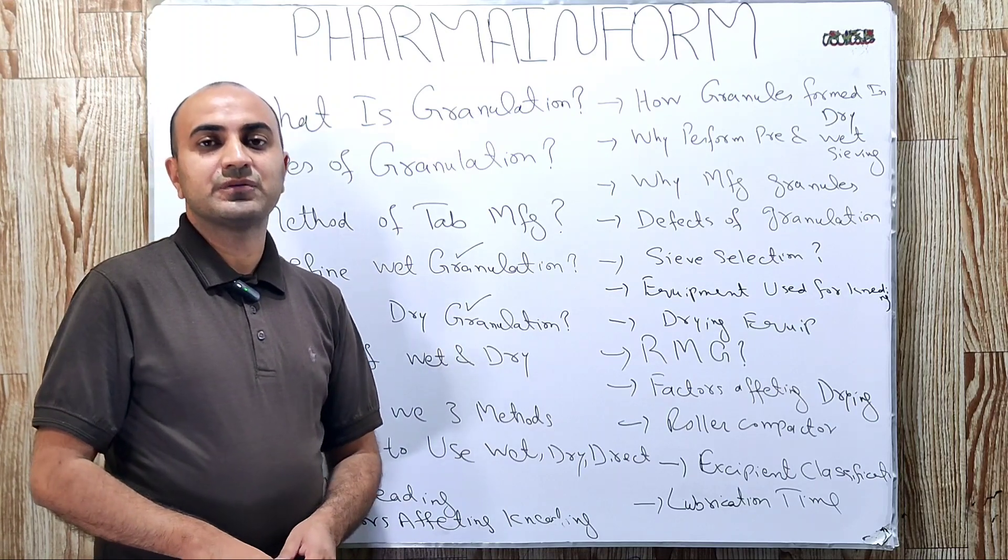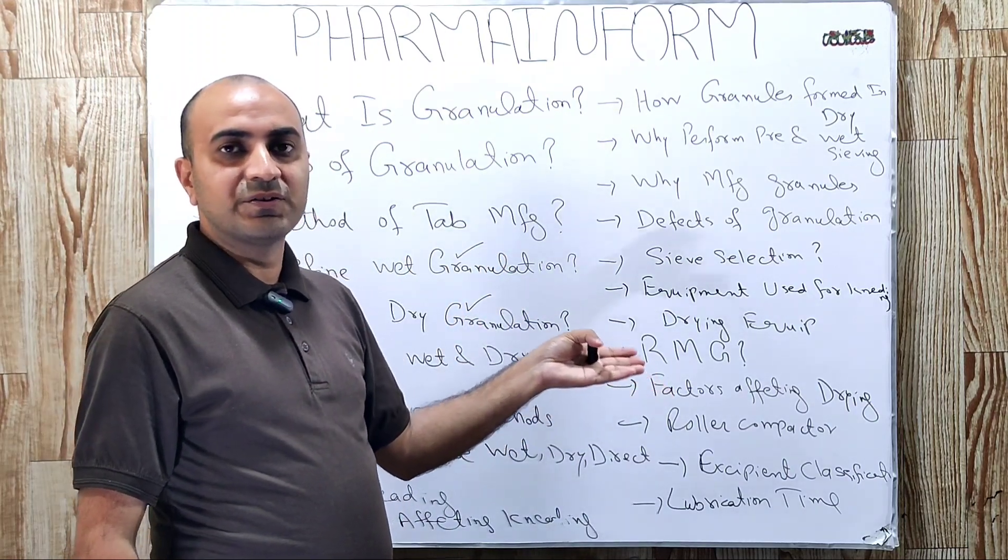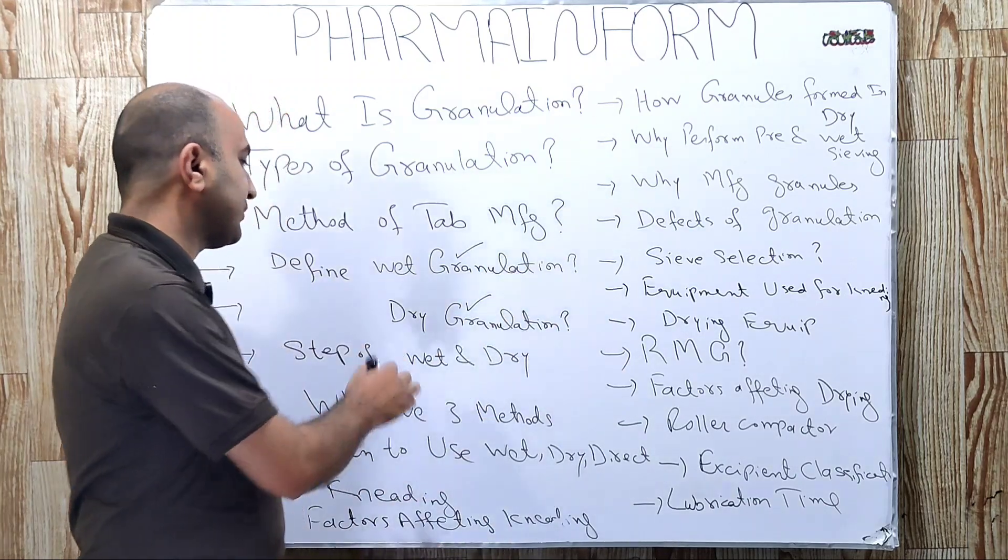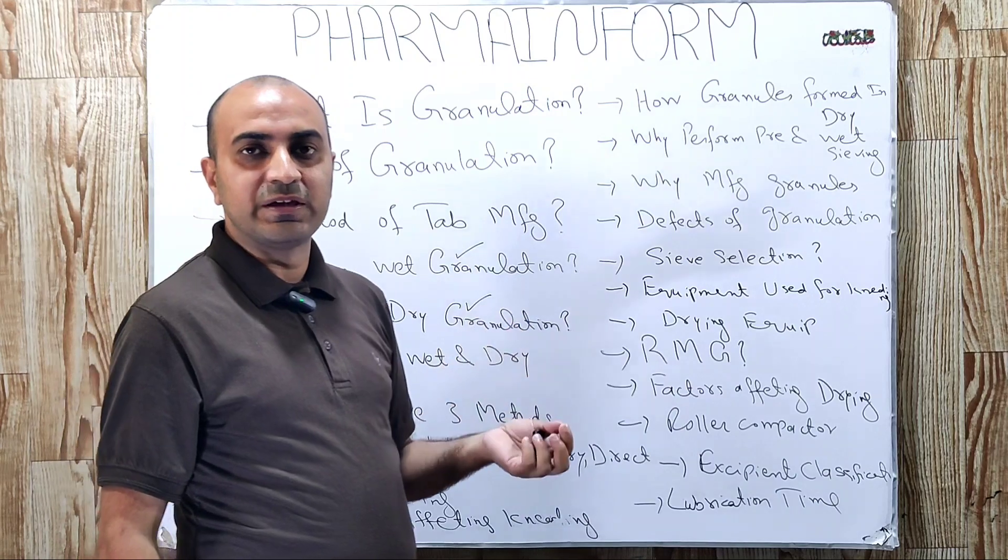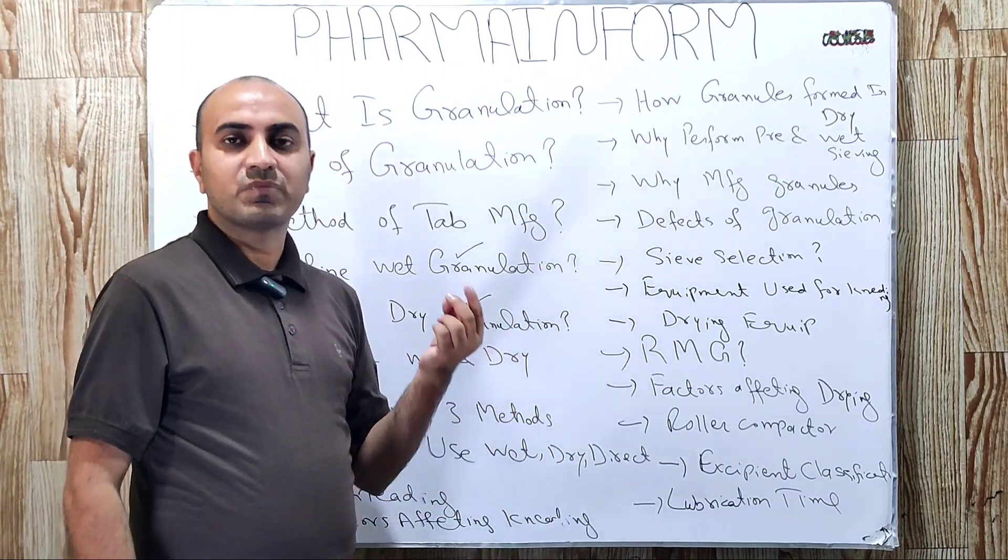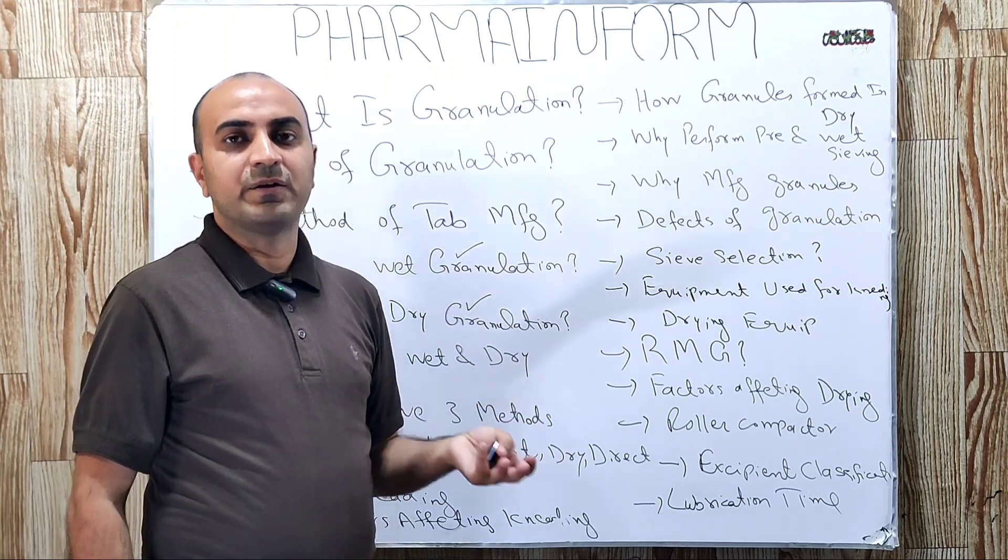Steps of wet granulation and dry granulation - the detailed video link is given in description. You can watch from there all the steps for brief overview. First step is for wet granulation: weighing, sieving, mixing, kneading, wet sieving, drying, dry sieving, and final blending.